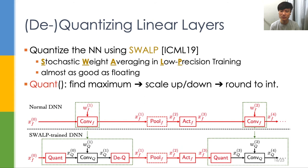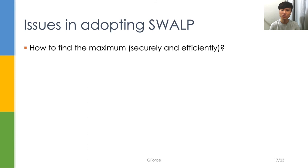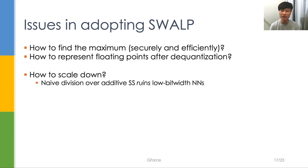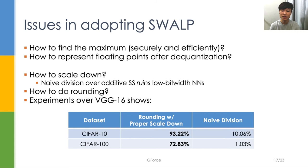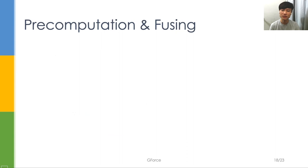Dequantization is scaling up or down the integers back to floating points. However, there's no free lunch. The first issue in integrating SWALP is to find the maximum amount of cryptographically protected values, which often engages huge performance overhead. It's also expensive to represent the floating points after dequantization. Moreover, we need to find the proper way to perform scaling down and rounding. Our experiment showed that if we scale down additive secret shares by naively dividing them, the neural network will perform no better than a random guess.